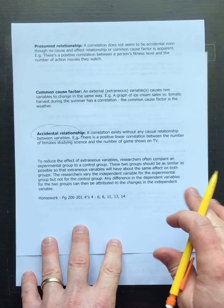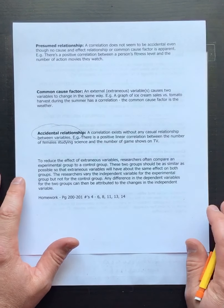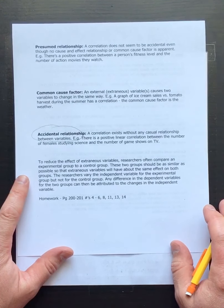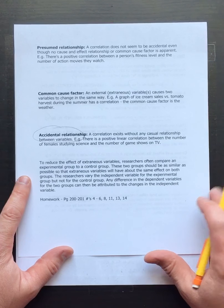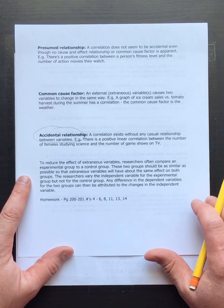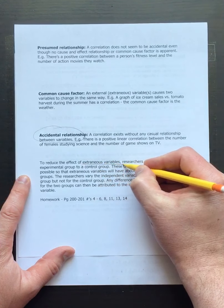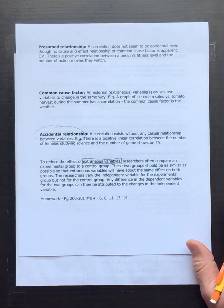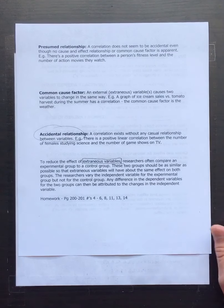So how do we critically look at an experiment and determine whether something is a common cause, a presumed relationship, accidental, or true cause and effect? We look at the experiment itself, who we gathered data from, the sampling process, and other features. One approach is to design an experiment carefully ahead of time. What we want to do is reduce extraneous variables — variables that can cause or mix up causality by introducing other factors.